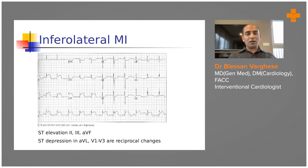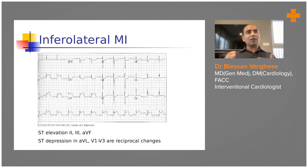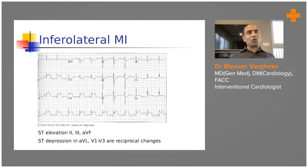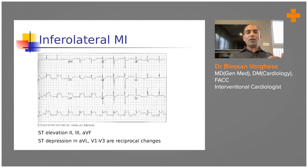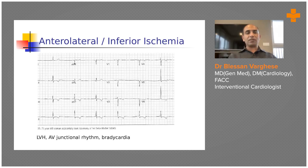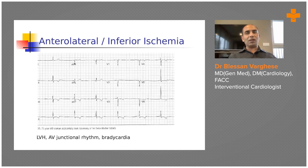In this inferolateral MI, the culprit is the dominant left circumflex artery, not always the right coronary artery. If the right coronary artery is involved, you get ST elevation in V1. If ST elevation is greater in lead II than lead III, it argues against right coronary artery as the culprit. If ST elevation is greater in lead III than lead II with anterior ST depression, the dominant left circumflex is the culprit artery.